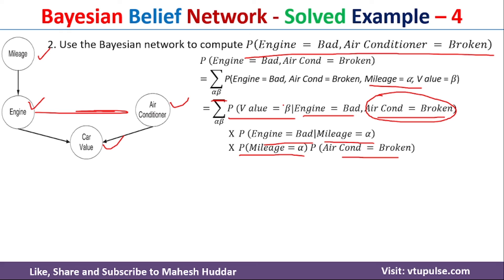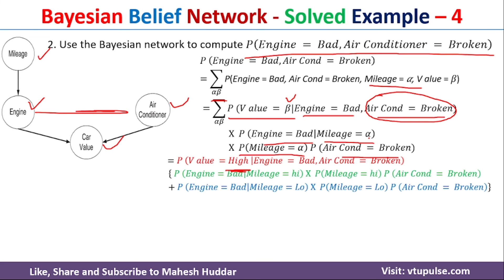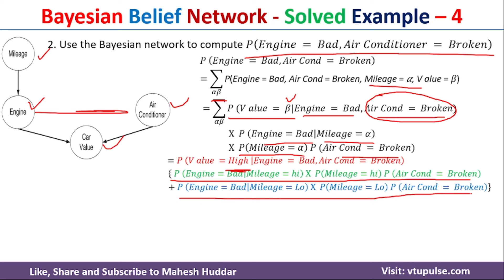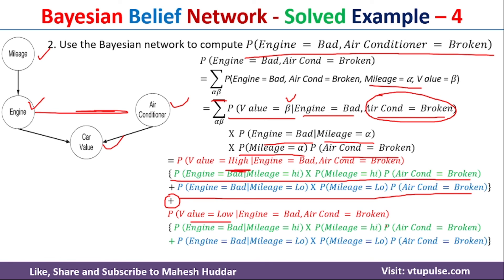We now put all possible values for alpha and beta. Beta can take values high and low, and for each value of beta, alpha can be high or low — giving us four combinations. For car value equal to high: mileage equal to high plus mileage equal to low. Plus car value equal to low: again mileage high and low. Substituting all the previously calculated probabilities, we get the final answer of 0.14530.